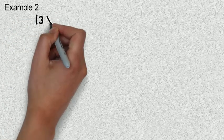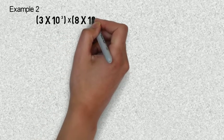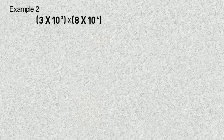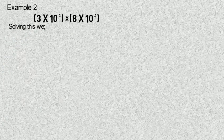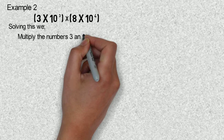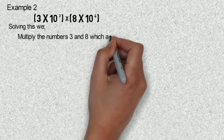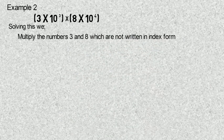Example two: three times ten raised to power three, multiplied by eight times ten raised to power four. First, we multiply the numbers three and eight, which are not written in index form. So, three times eight gives twenty-four.